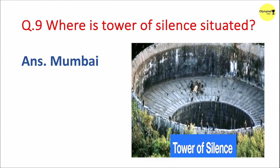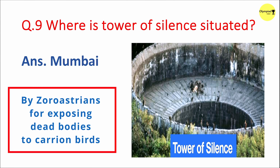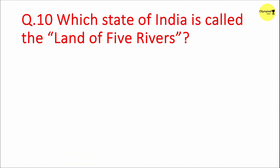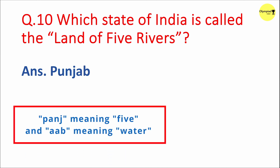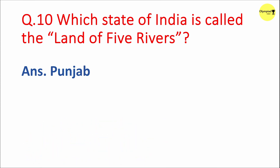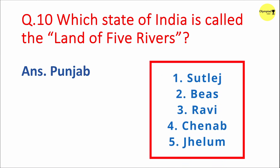Question 9: Where is the Tower of Silence situated? Answer: Mumbai. A Tower of Silence is a circular raised structure built by Zoroastrians for exposing dead bodies to carrion birds. Question 10: Which state of India is called the land of five rivers? Answer: Punjab. The term Punjab is derived from two Persian words — 'panj' meaning five and 'ab' meaning water. The five rivers are Satluj, Beas, Ravi, Chenab and Jhelum.